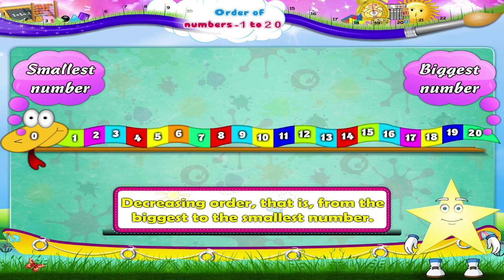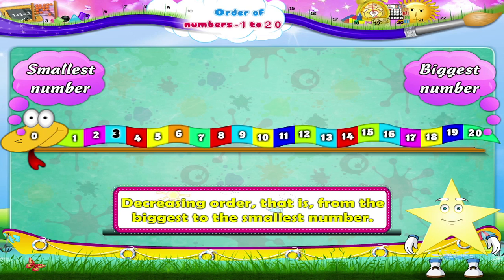Shall we begin? The biggest number is 20, so: 20, 19, 18, 17, 16, 15, 14, 13, 12, 11, 10, 9, 8, 7, 6, 5, 4, 3, 2, 1, and 0.